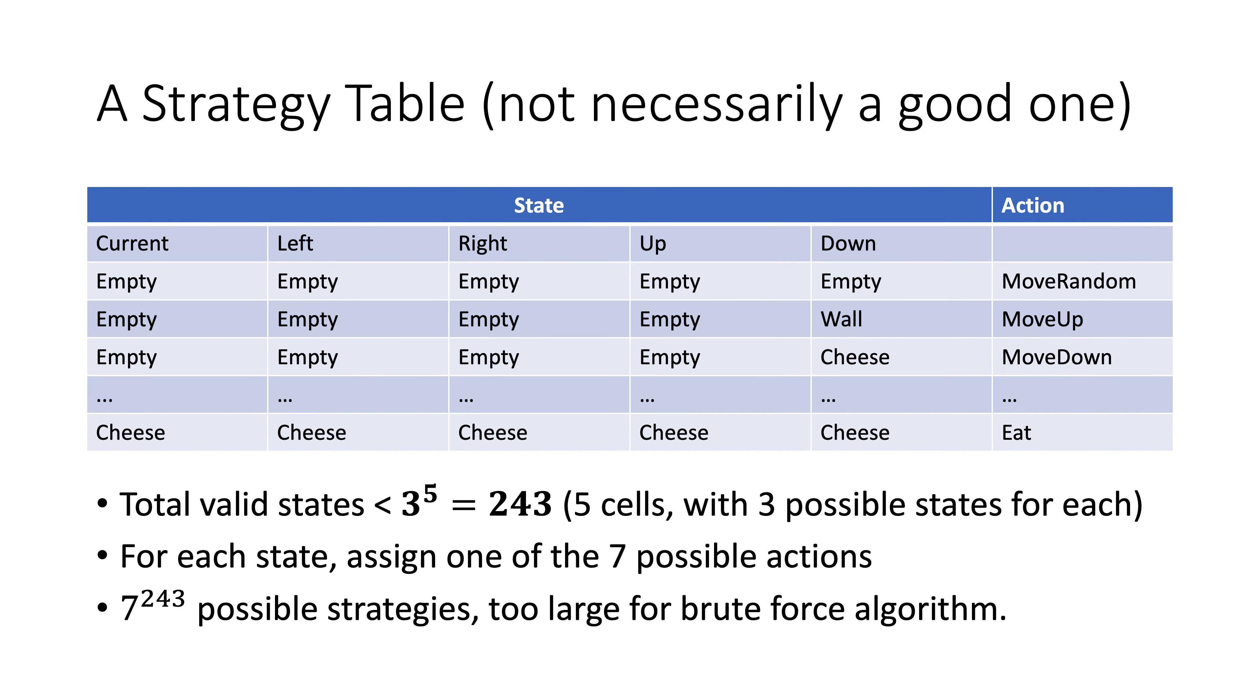How do we solve this game? Well, in general we could compose a strategy table. For each possible state, we assign an appropriate action. Jerry can see the states of five cells, and each cell can have three possible states. That's 3 to the power of 5 equal to 243 states. All we need to do is to fill the table with 243 actions corresponding to the 243 states.